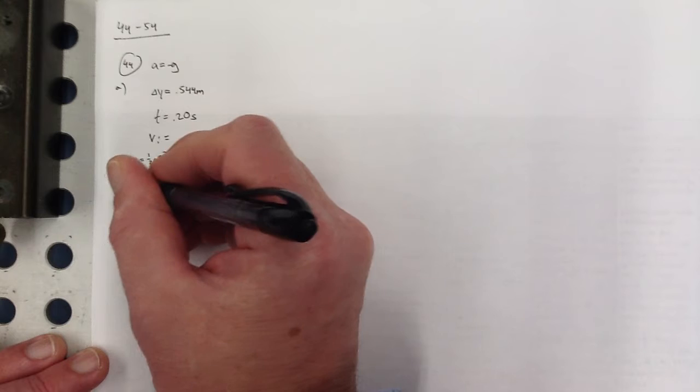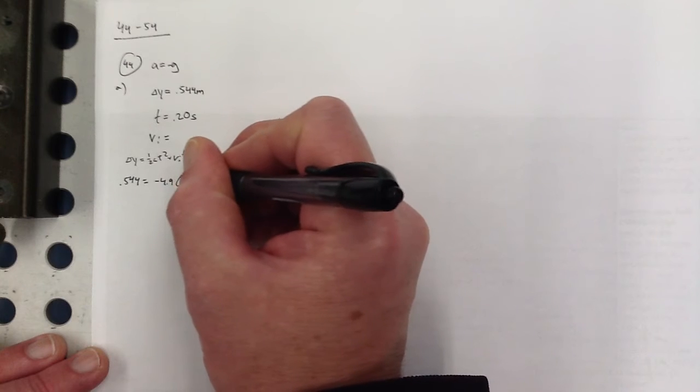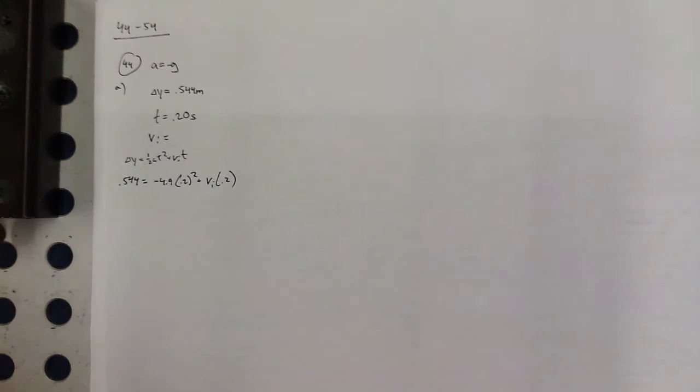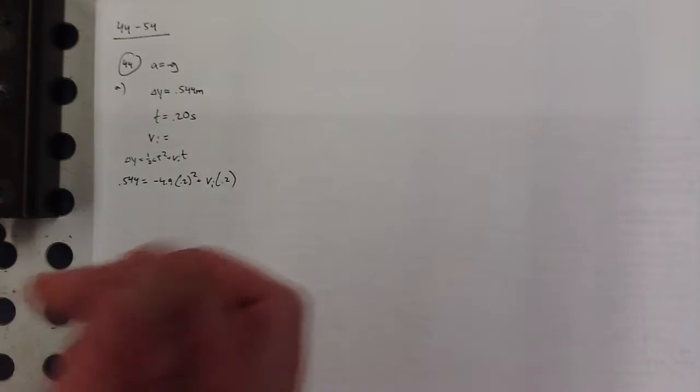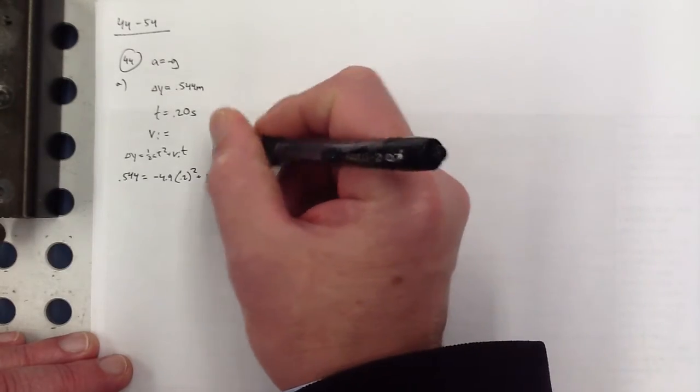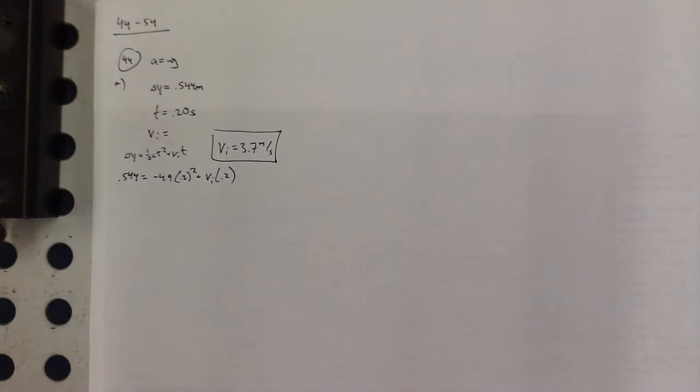So that looks like delta y equals 1 half at squared plus vi t. And it looks like the delta y is 0.544 in the up direction, minus 4.9 t squared plus vi t. Good thing I took algebra. 0.544, going to add to that 4.9 times 0.2 squared, going to divide that by 0.2. So it looks like the initial velocity was 3.7 meters per second.